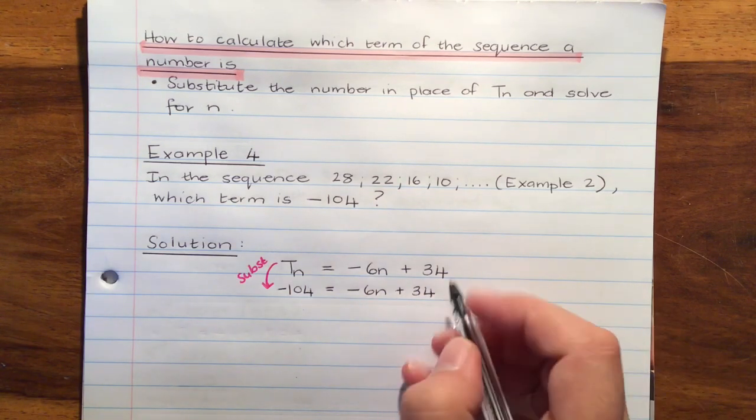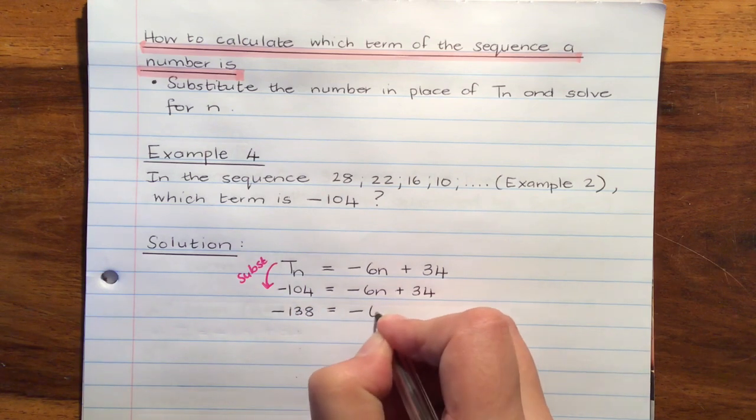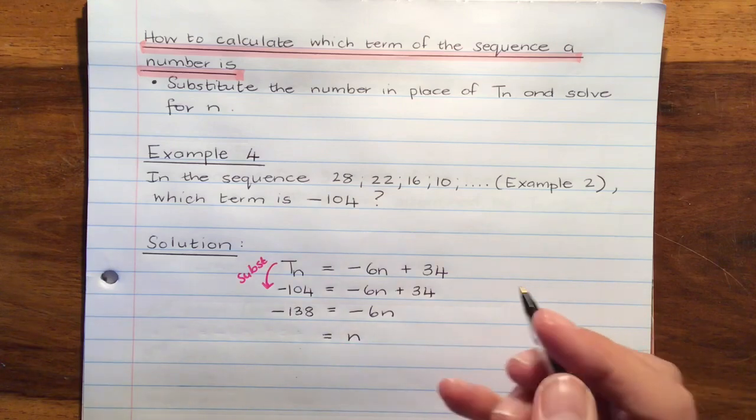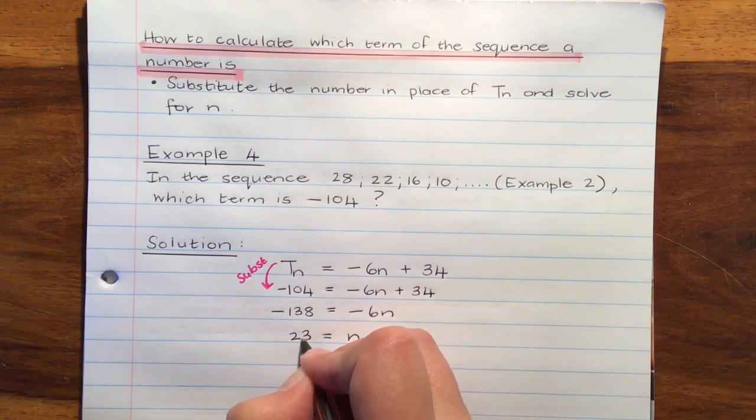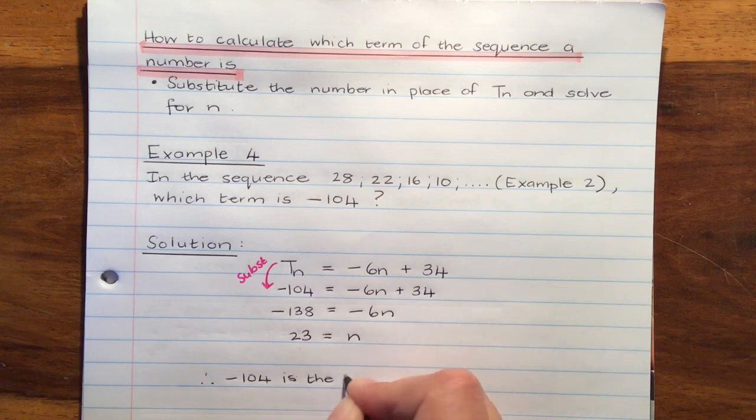And then we're going to solve for n. So I'm going to subtract 34 from both sides. And then I'm going to divide both sides by negative 6, which gives us an answer of 23. And what does that answer mean? It means that negative 104 is the 23rd term.